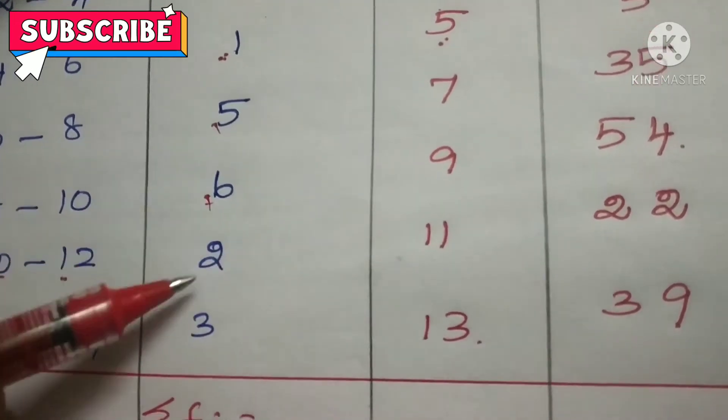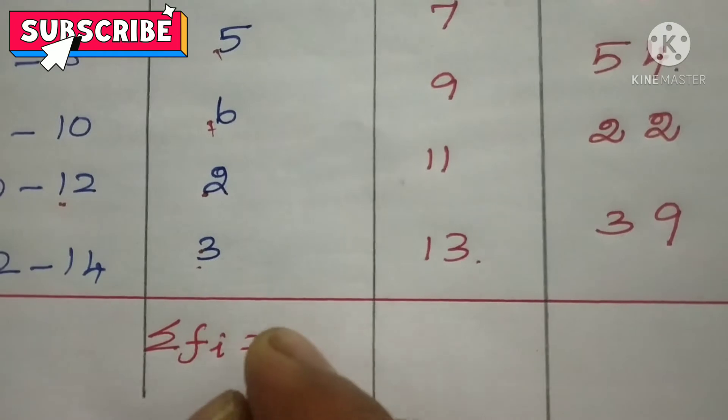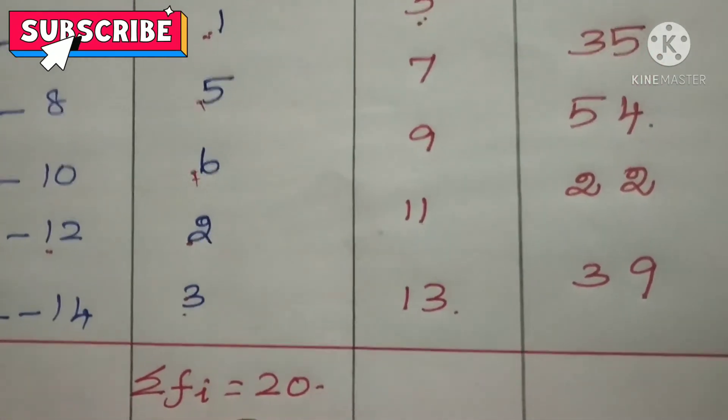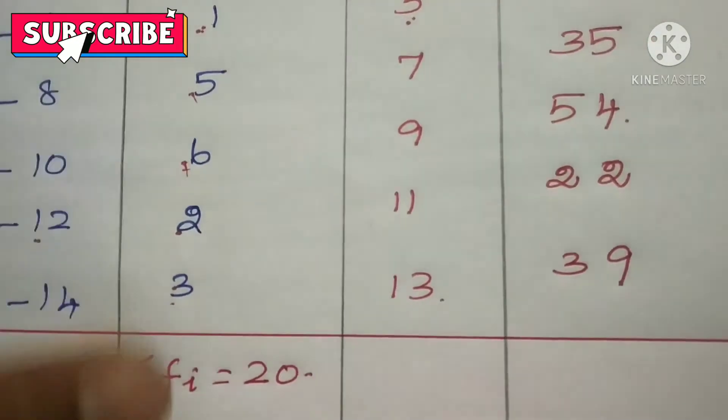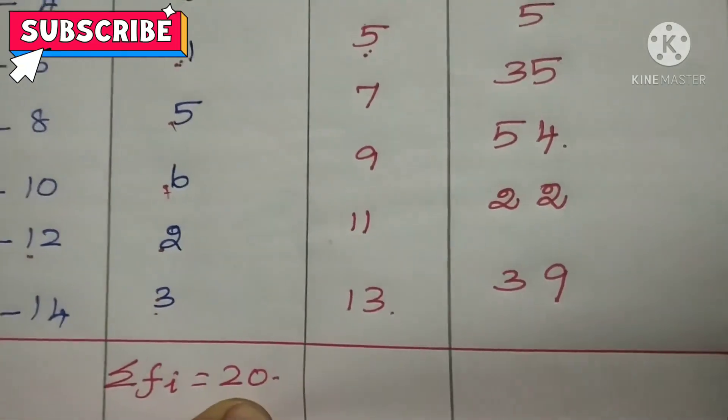15 plus 2 is 17. 17 plus 3 is 20. So already it is given that is 20 houses in a locality. Therefore if only you write it correctly, then only you have to check whether we write it correctly. So sigma Fi equals 20.